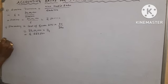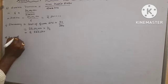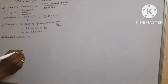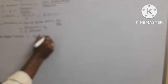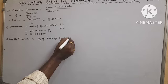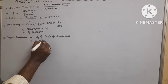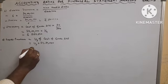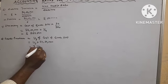Now number D, credit purchase equals to one third of cost of goods sold, equals to one third into 22 lakhs 50 thousand equals to rupees 7 lakhs 50 thousand.